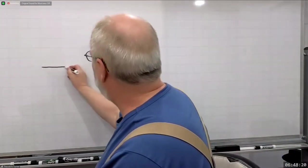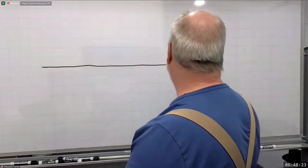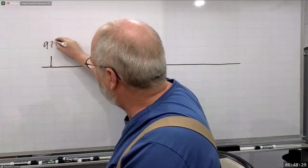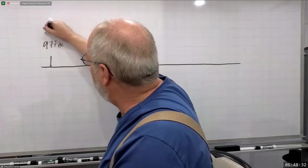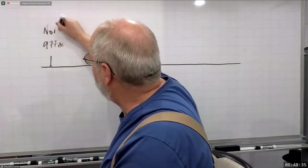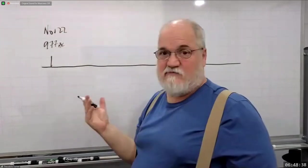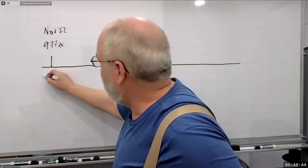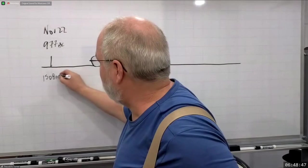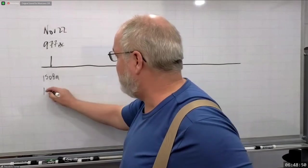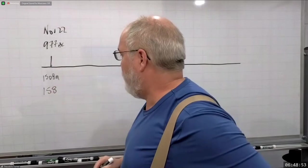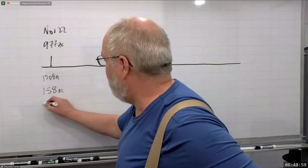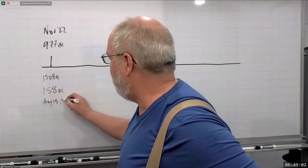So the first thing we have to consider is that back in 977 BC, we have this date, November 22nd — that's the Julian date for this event. This is going to be the 15th day of the 8th month. So this is a symbol tied to a covenant, 158 BC. It's also tied to August 15th, 1844.